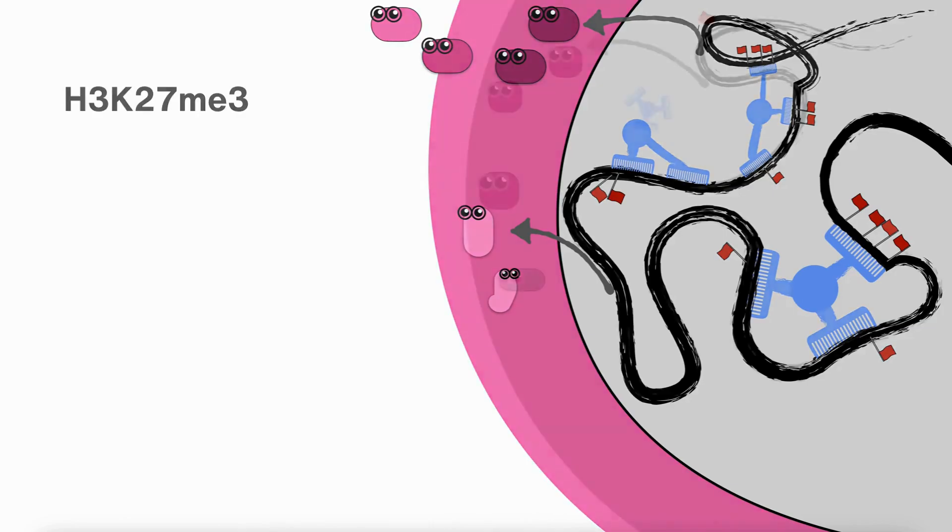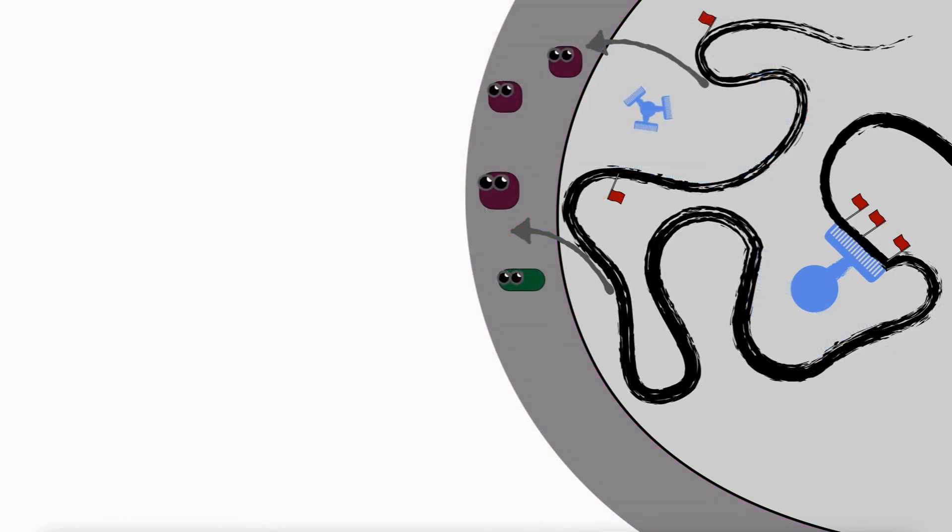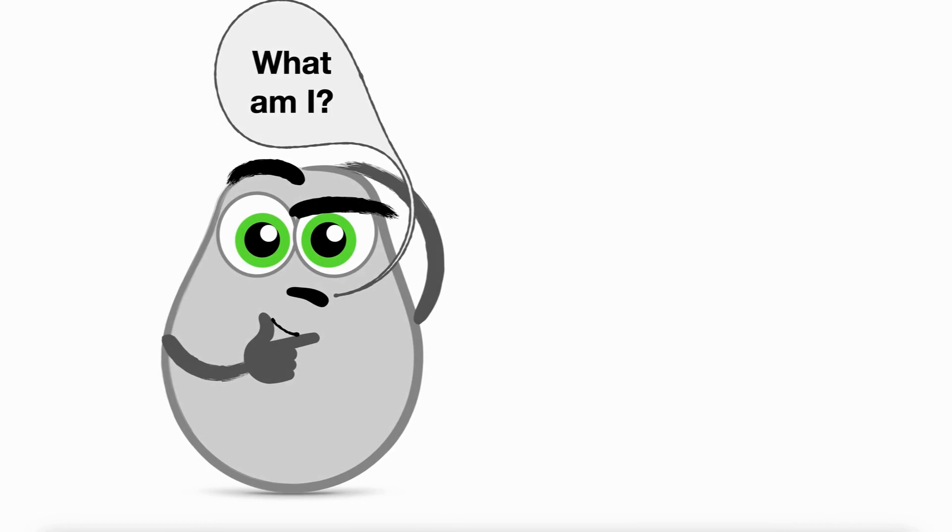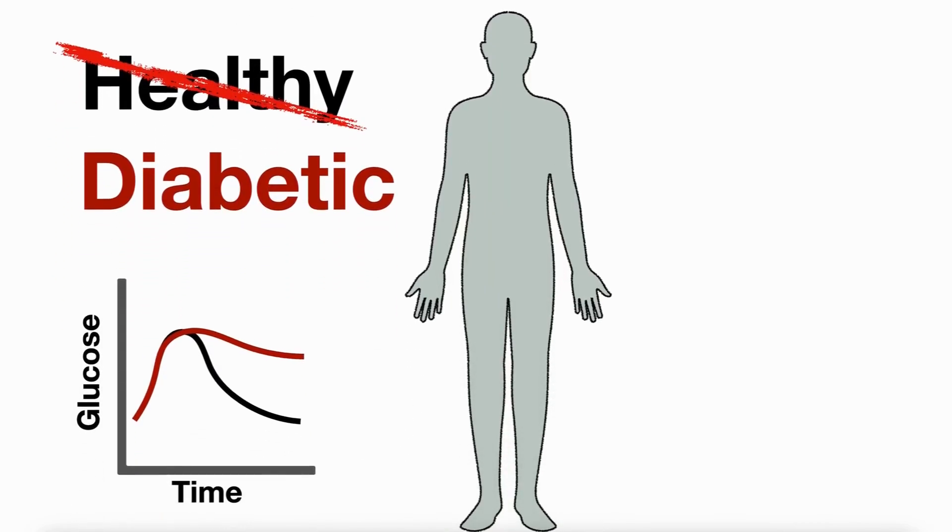If beta cells lose H3K27 trimethylation, they forget who they are, they forget their identity, and this negatively affects insulin production. Without insulin, the body can't regulate blood sugar, and we get type 2 diabetes.